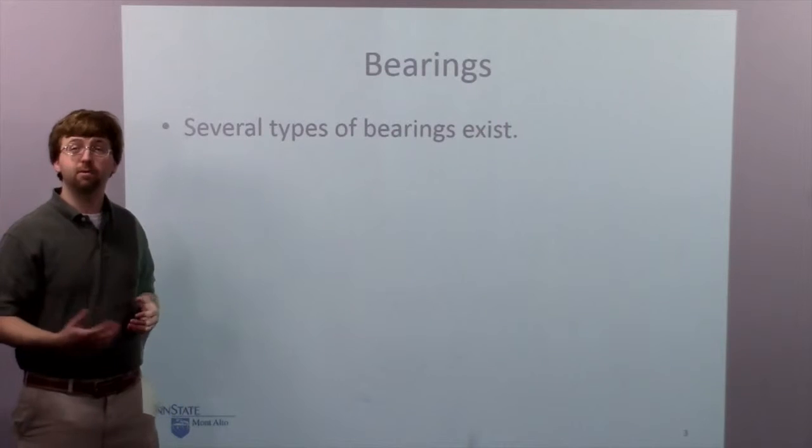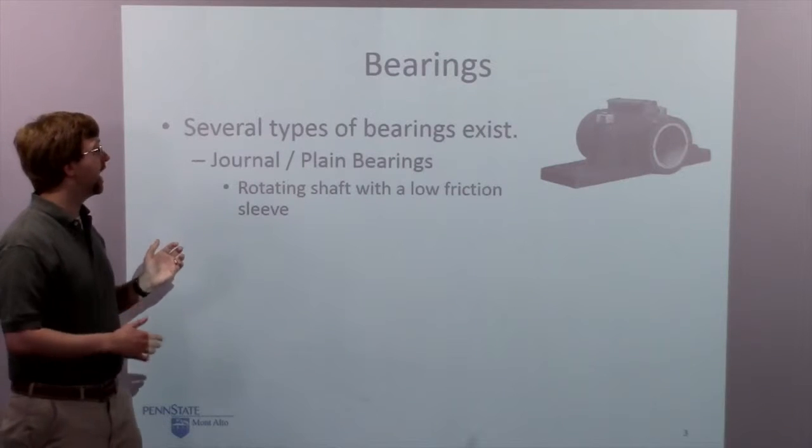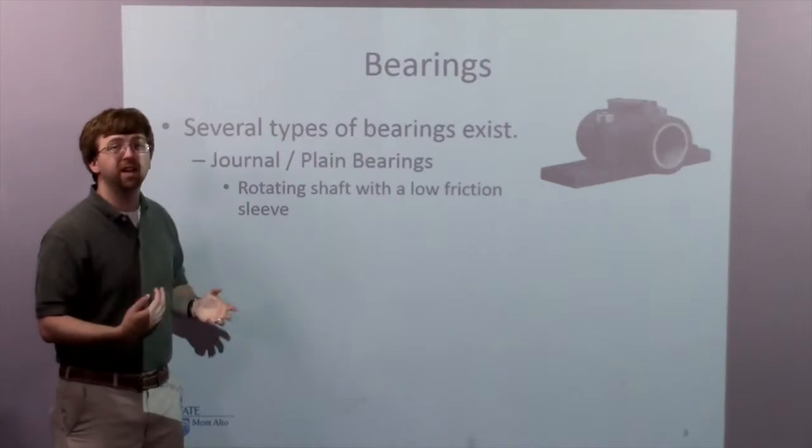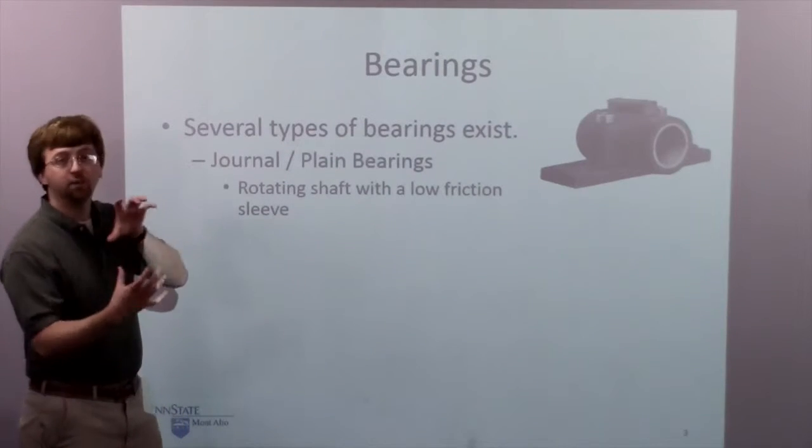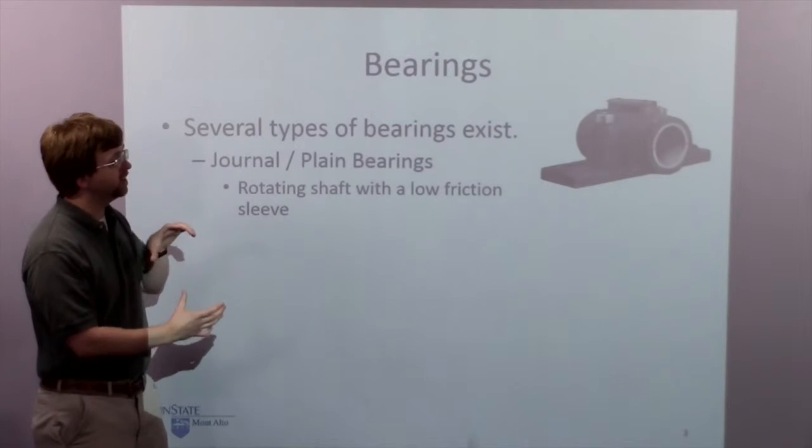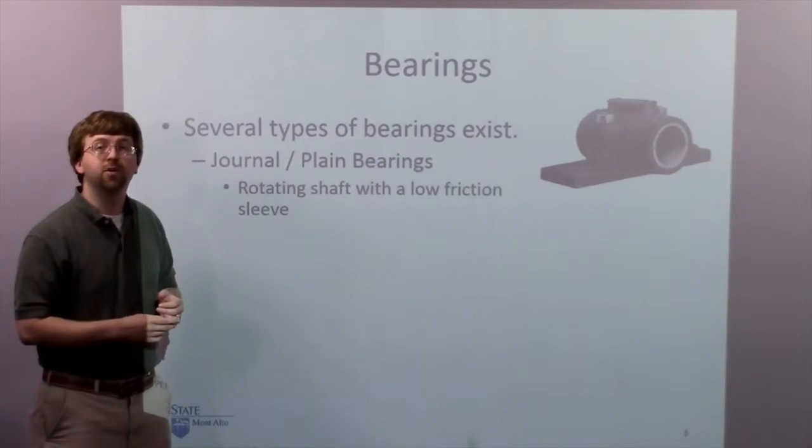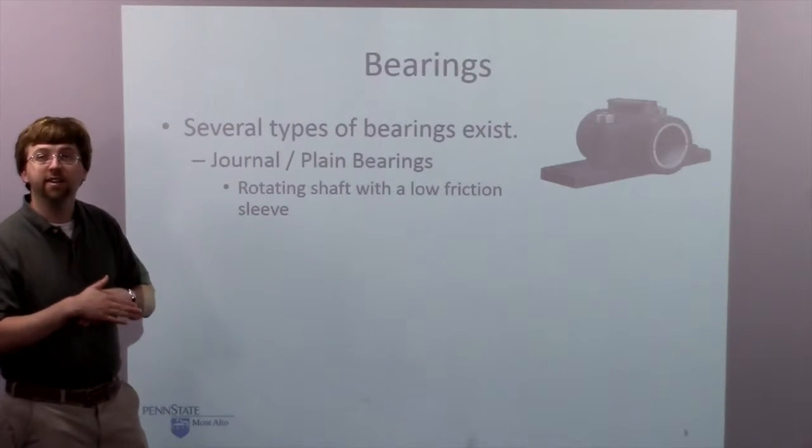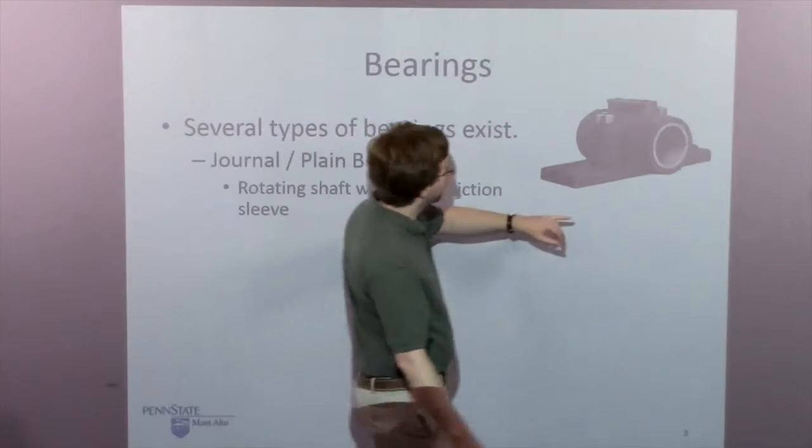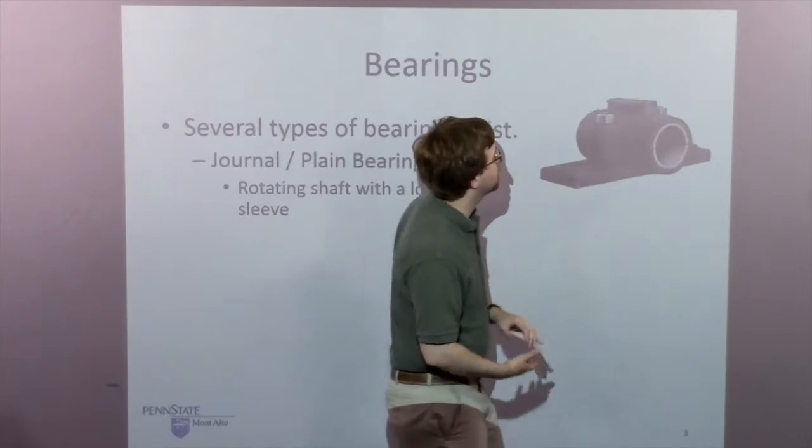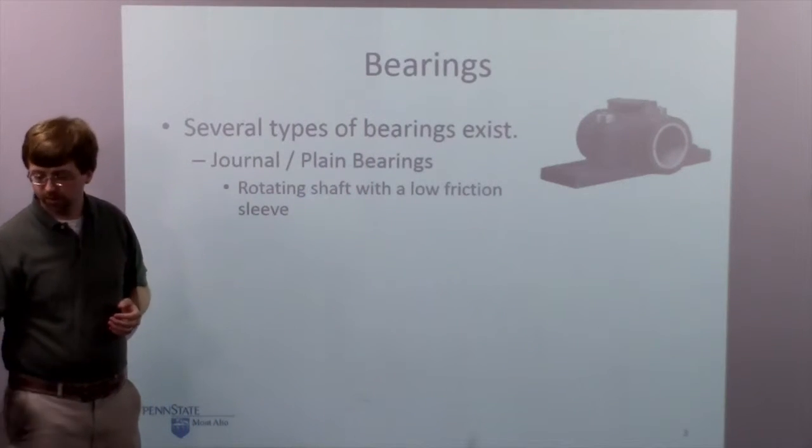There are several types of bearings that exist and we're going to focus on one for today. The first type is called a journal or plane bearing. In this type we've got a rotating shaft - usually cylindrical - that fits into a cylindrical hole with some sort of low friction material between the shaft surface and the sleeve surface. An example here - this white material is probably nylon. Nylon and steel have a very low coefficient of friction between them.